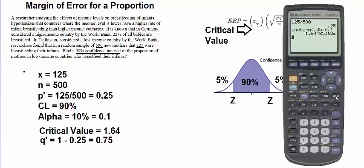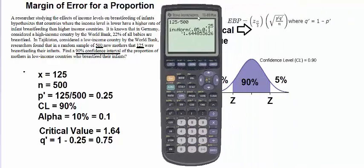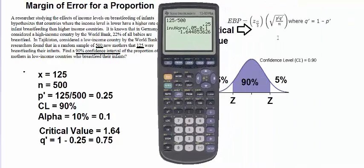So we are ready to use our formula here to calculate our margin of error. So the critical value we are using is 1.64 times the square root of 0.25 times 0.75 divided by n, which is 500. Close the parentheses. There we go. About 3%.